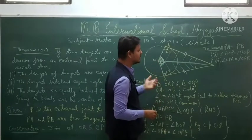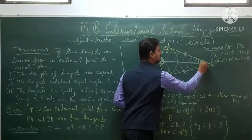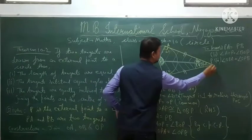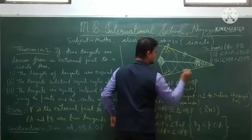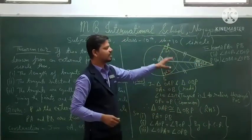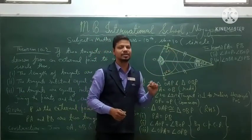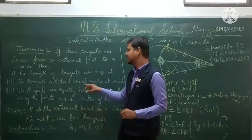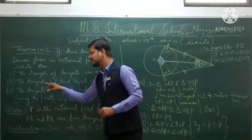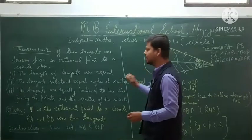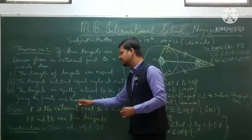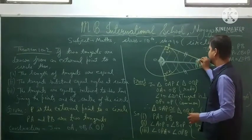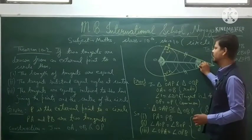So we have proved all three parts: first, the lengths of the tangents are equal (PA = PB); second, the tangents subtend equal angles at the center (angle AOP = angle BOP); and third, the tangents are equally inclined to the line joining the external point and the center of the circle (angle OPA = angle OPB). Hope you understand this video.